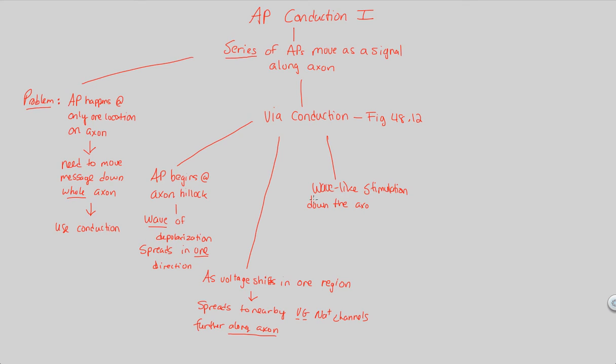We get a wave-like stimulation down the axon via voltage-gated channels, because every single time we get the shift in voltage down the axon, the next voltage-gated channel opens, and then the next one opens, and then the next one opens. We get this sort of build-up of channel opening, voltage-gated sodium channel openings.